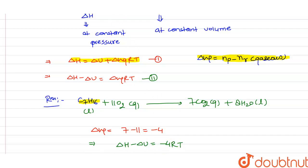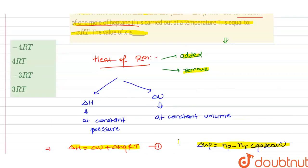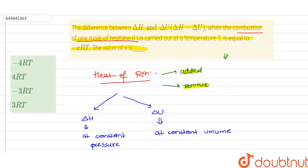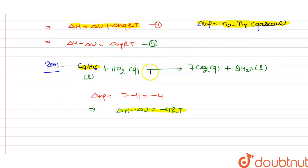Here it has been given that the value of delta H minus delta U is equal to minus x RT. So we have to find the value of x. From this value we can say that the value of x is what? The value of x is equal to 4.